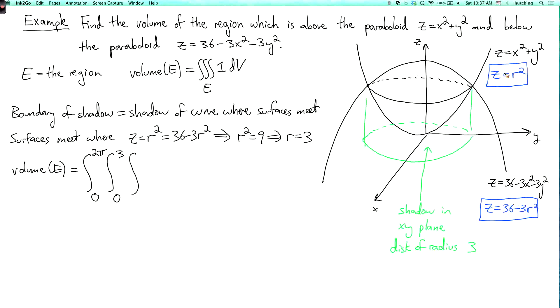I mean, z equals r squared in general sort of looks like it's higher. But for the region that we're talking about, z equals r squared is the lower surface. It's the lower boundary of the region. So z starts at r squared. And it goes up to the other surface, which is where z equals 36 minus 3r squared.